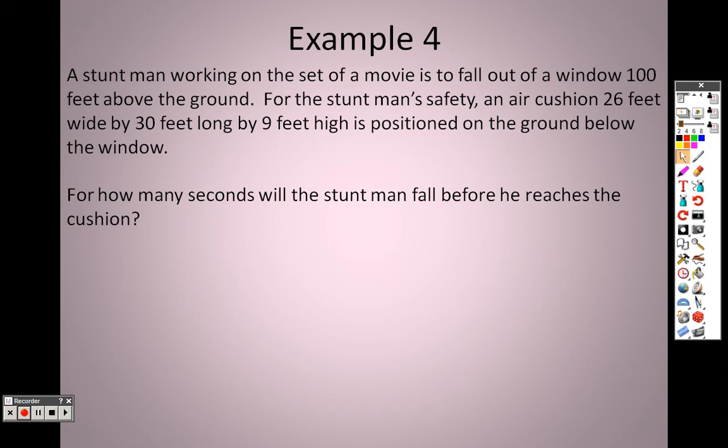We have a stuntman working on a set of a movie, and he falls out a window that's 100 feet above the ground. For the stuntman's safety, an air cushion 26 feet wide by 30 feet long by 9 feet high is positioned on the ground below the window.